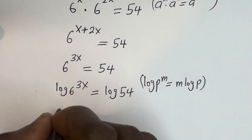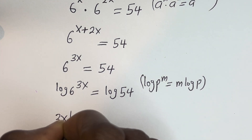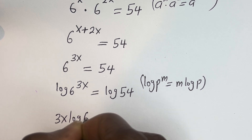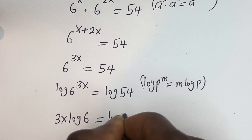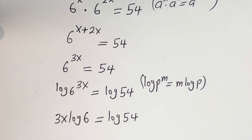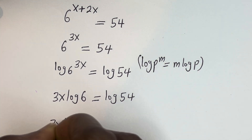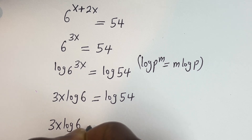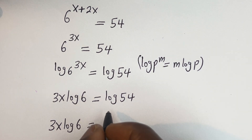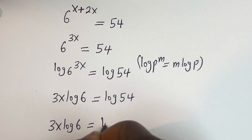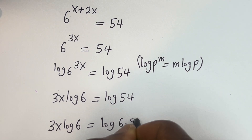Then this can be written as 3x log 6 is equal to log 54. Here, log 54 can be written as log of 6 multiplied by 9.